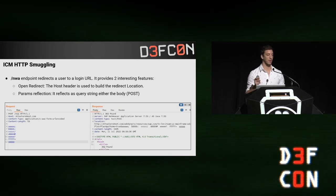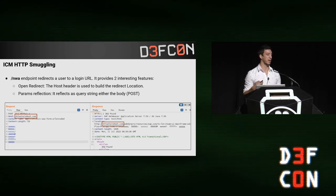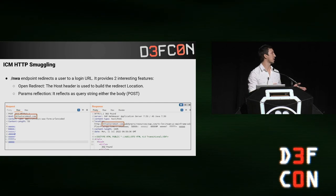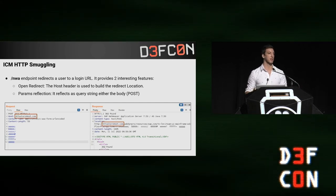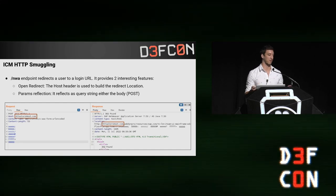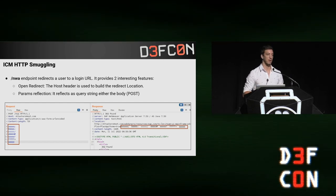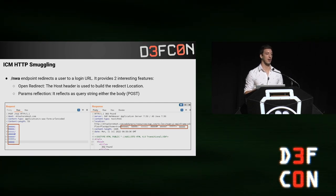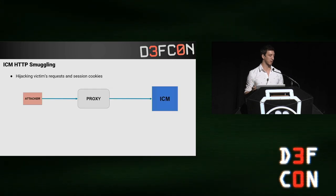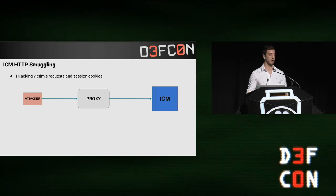My first example uses HTTP request smuggling with the NWA endpoint, which is present in all SAPs and is used to redirect users to the login URL. It provides two interesting features: first, an open redirect that allows setting anything in the relocation host via the host header. As you can see, placing the attacker host in the host header causes it to be reflected in the location header of the response. This is actually a feature, not a vulnerability by itself, because it cannot be exploited alone. Also, there is parameter reflection, which allows reflecting anything placed in the request body into the query string of the relocation URL.